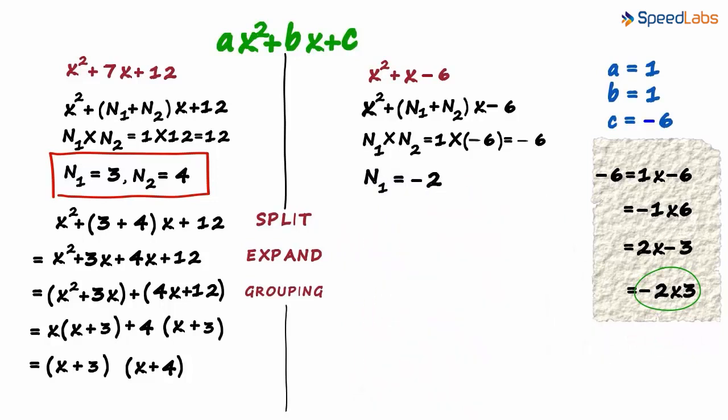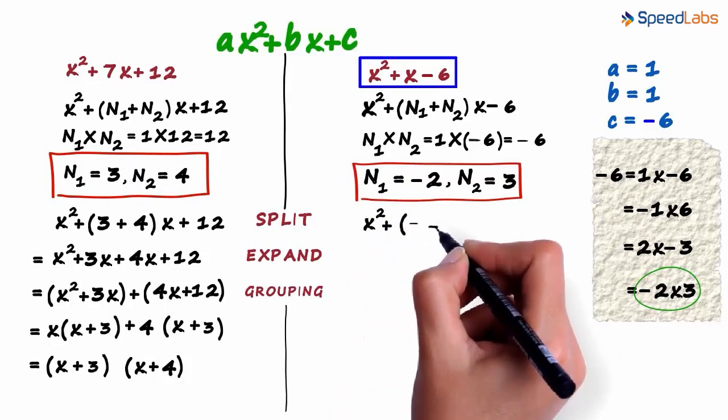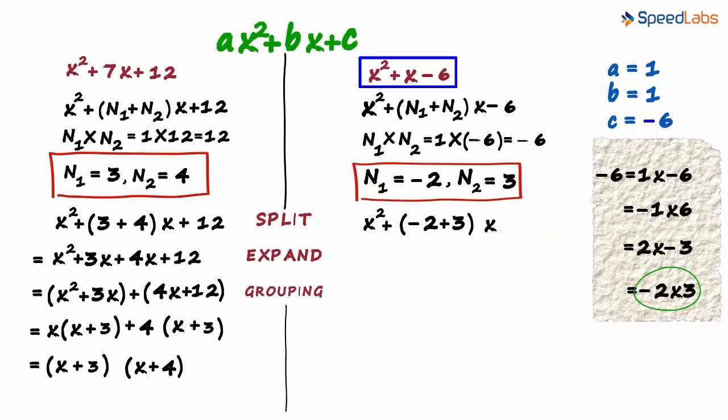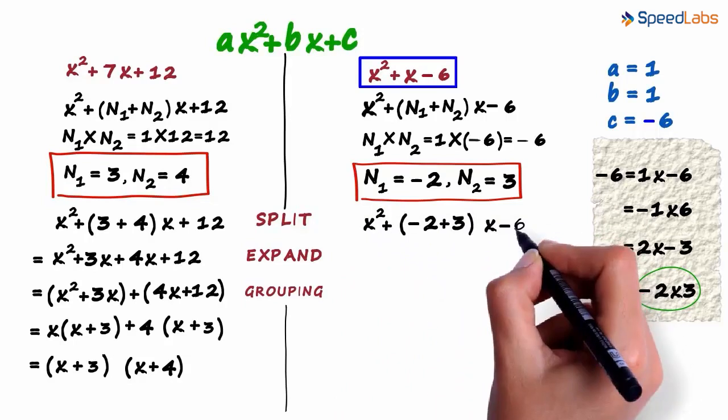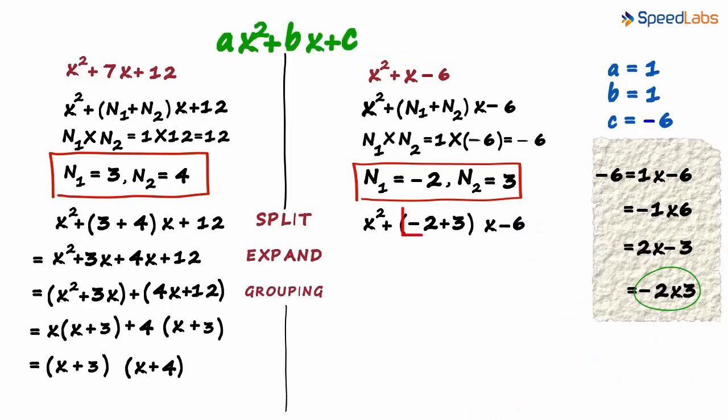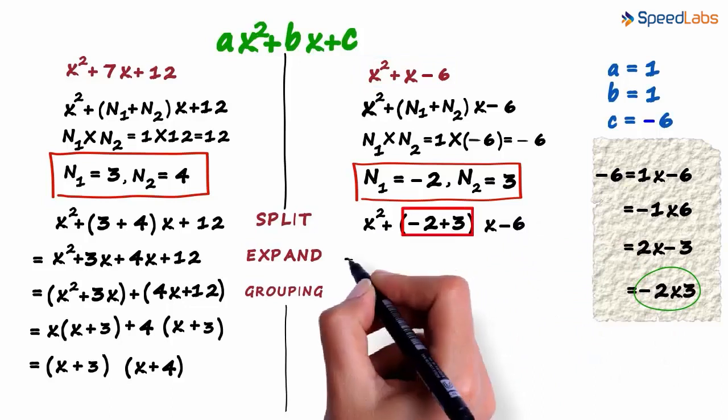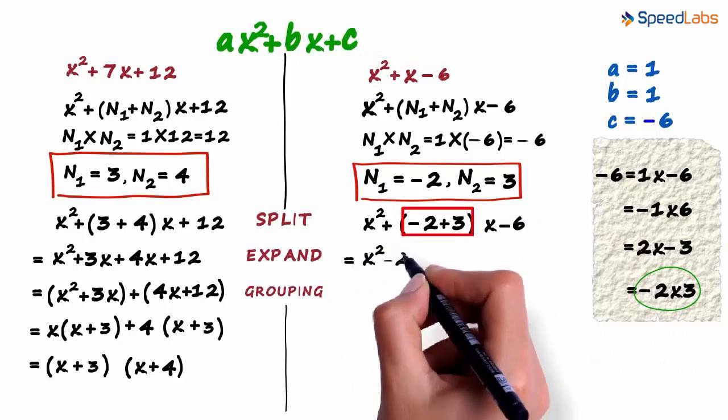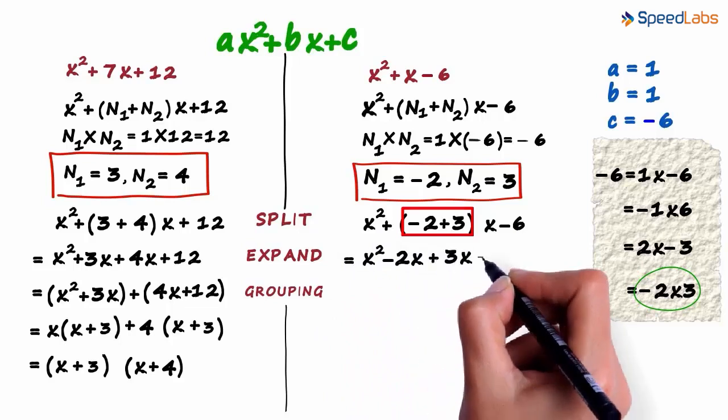n1 is minus 2 and n2 is 3. Let me rewrite the polynomial. This can be written as x squared plus (minus 2 plus 3) multiplied by x minus 6. Then we expand the brackets and write it as x squared minus 2x plus 3x minus 6.